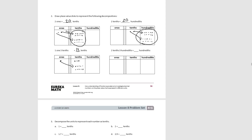Next we have two tenths and three hundredths, and we want to end up with hundredths, so we decompose. Two tenths becomes twenty hundredths, plus three hundredths gives us twenty-three hundredths.